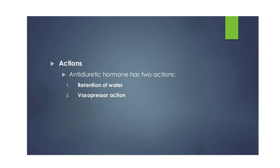The main functions of ADH or vasopressin are: first, it increases the amount of solute-free water reabsorbed from the filtrate in the kidney tubules of the nephron; second, AVP constricts arterioles, increasing peripheral vascular resistance and raising arterial blood pressure. A third possible function is that AVP may be released directly into the brain from the hypothalamus, playing an important role in social behavior, sexual motivation, pair bonding, and maternal responses to stress.